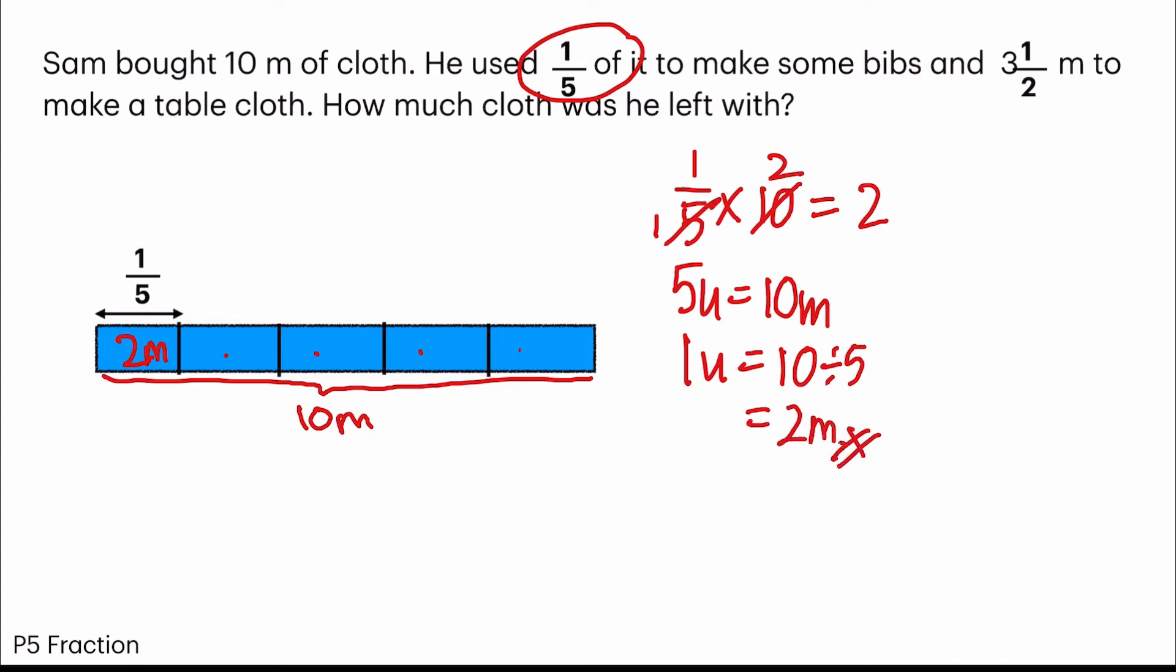So what's the leftover? The leftover will be 10 minus 2 equals to 8, 8 meters left.